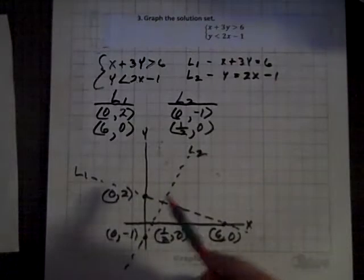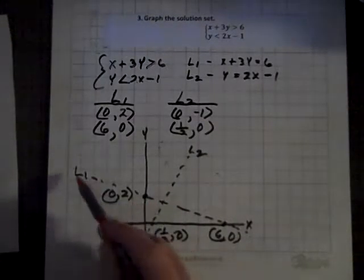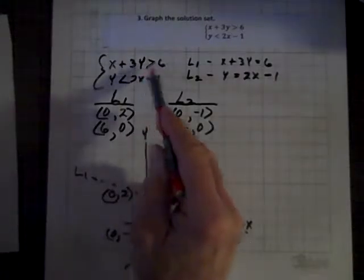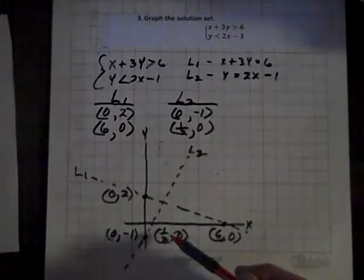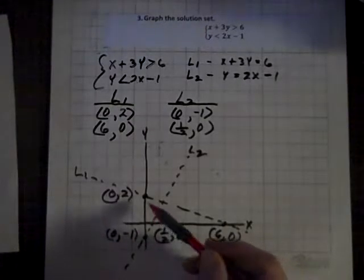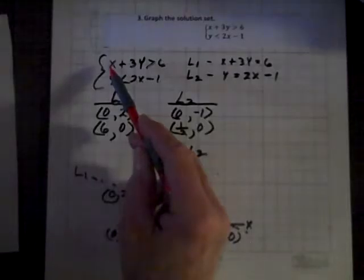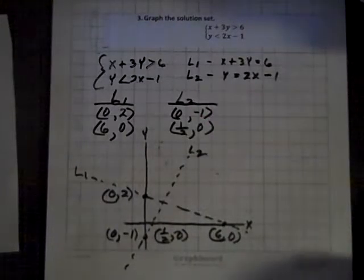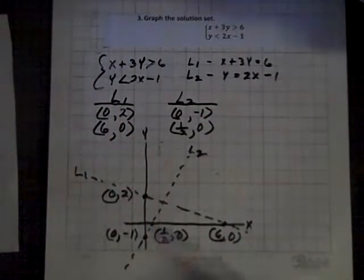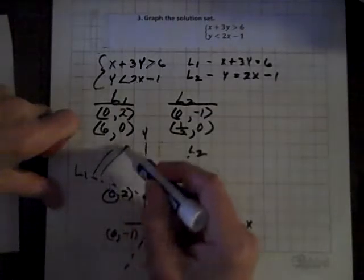And that is not true. So then this point doesn't work relative to the first inequality, so no point below L sub 1 will work. But let's try a point above. How about 0, 4? If we replace X with 0 and Y with 4, hey, we've got a true statement, and 12 is greater than 6. So we're going to shade that region above L sub 1.